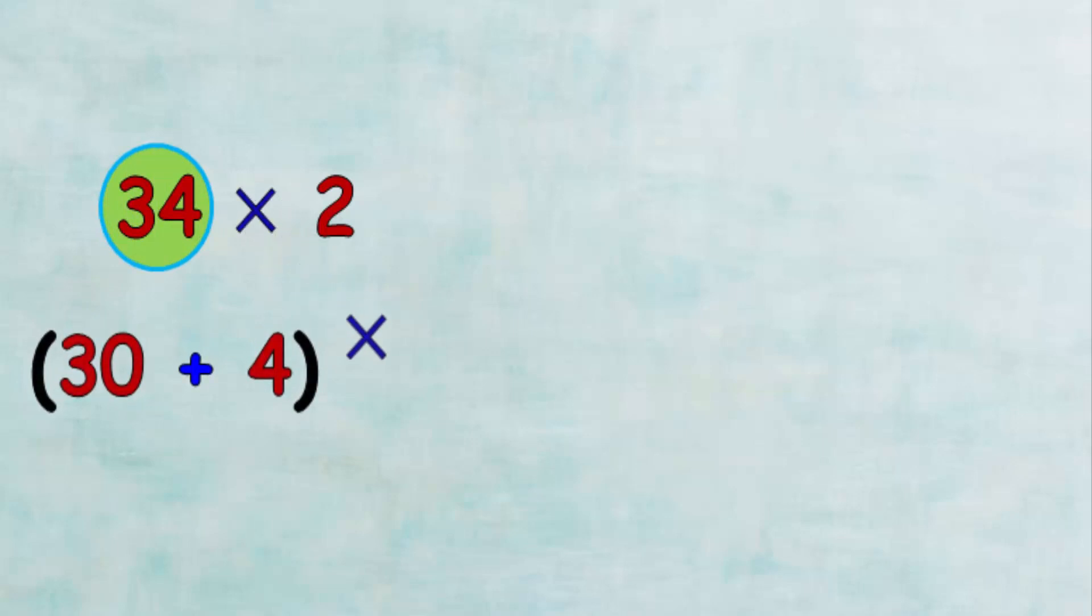Then we will multiply 2 by 30, which equals 60, and multiply 2 by 4, which equals 8.